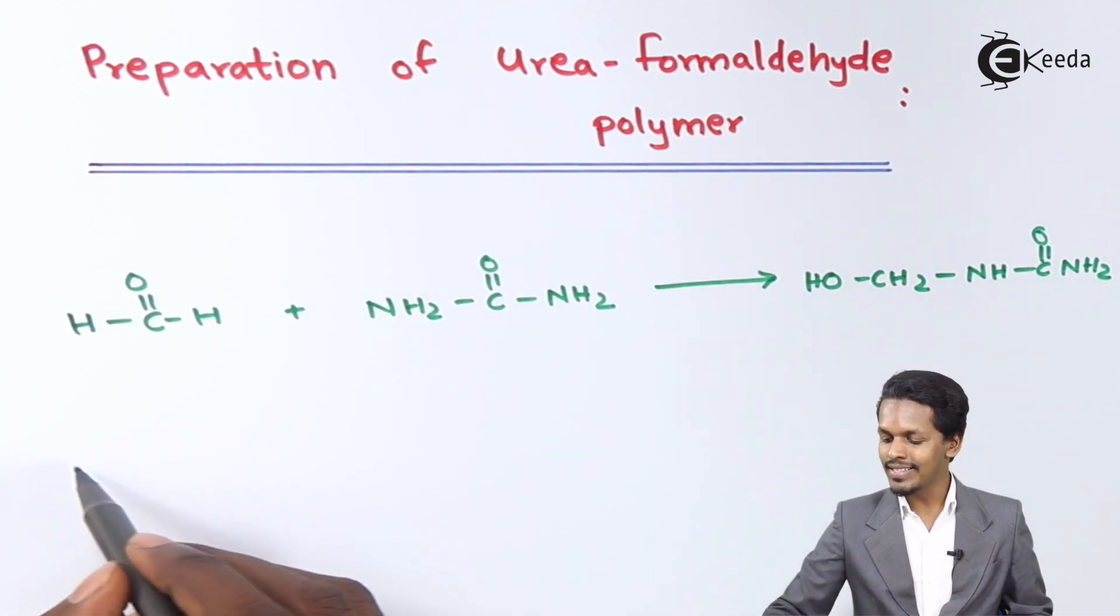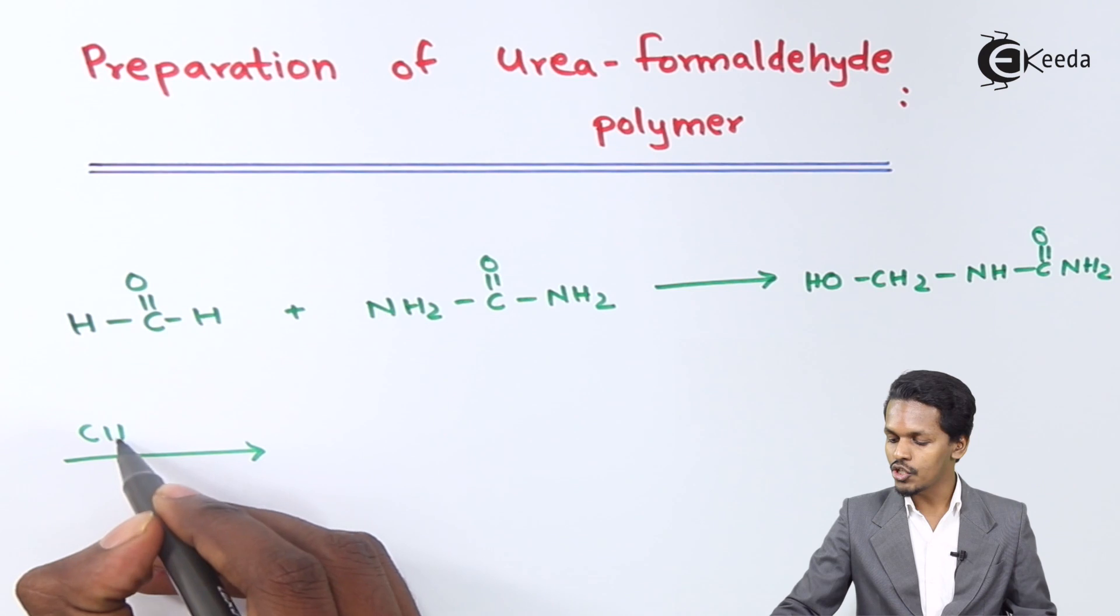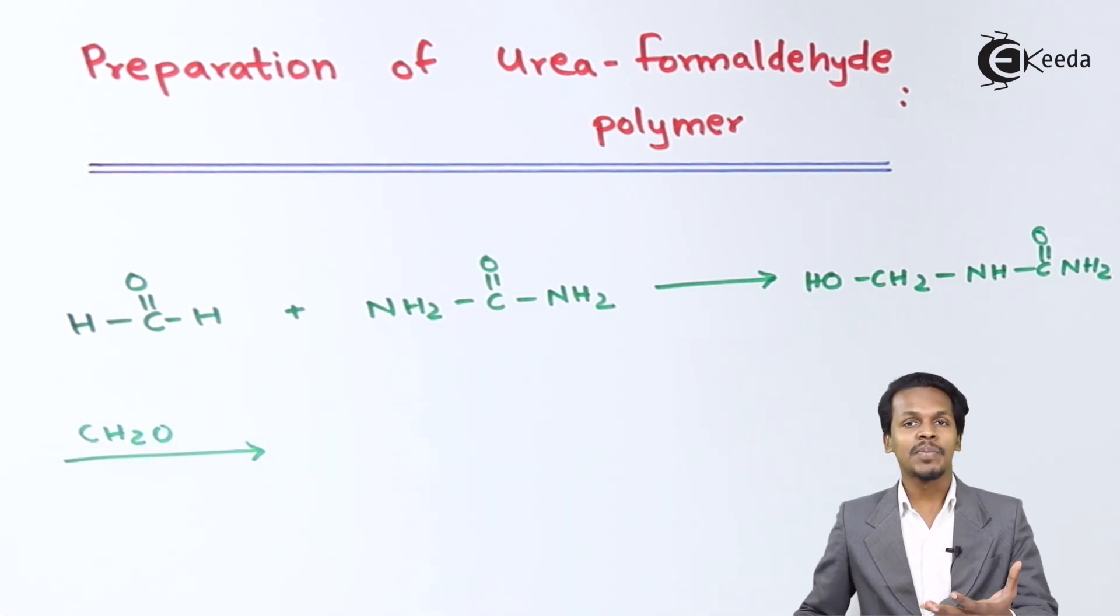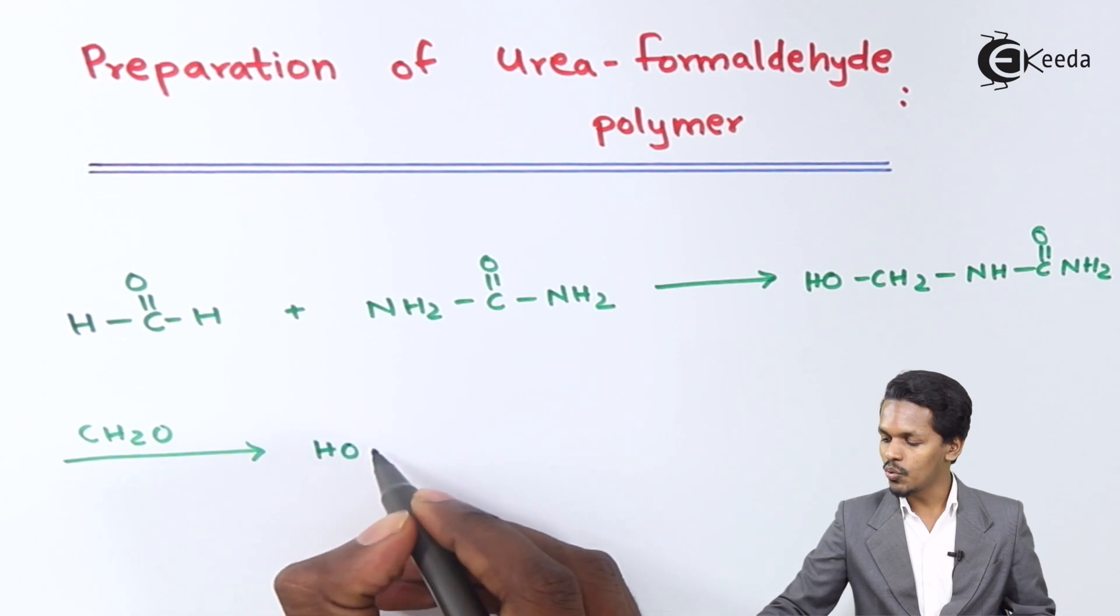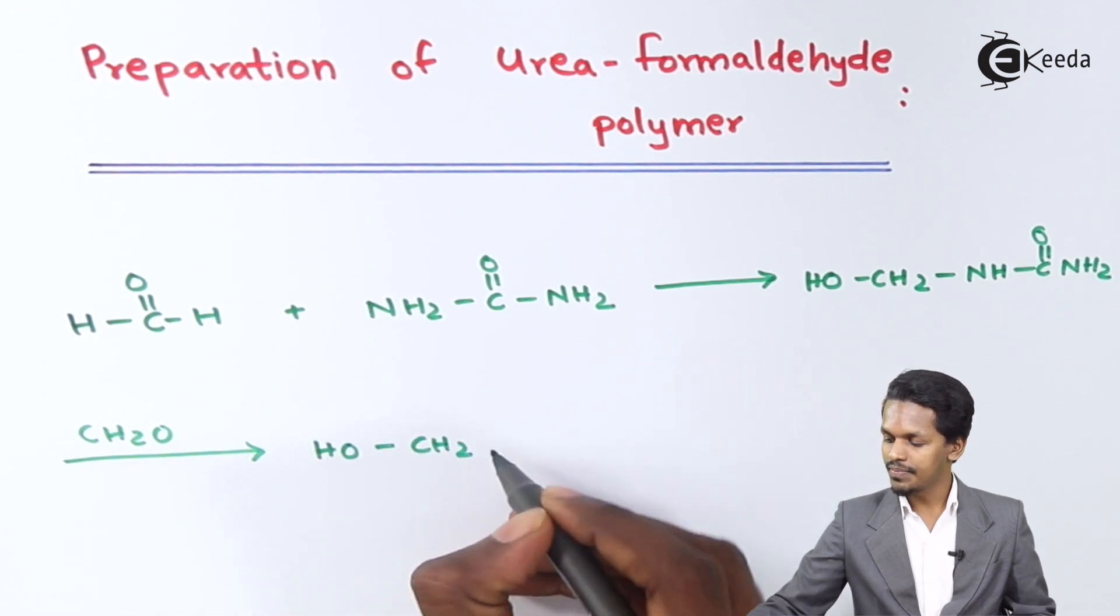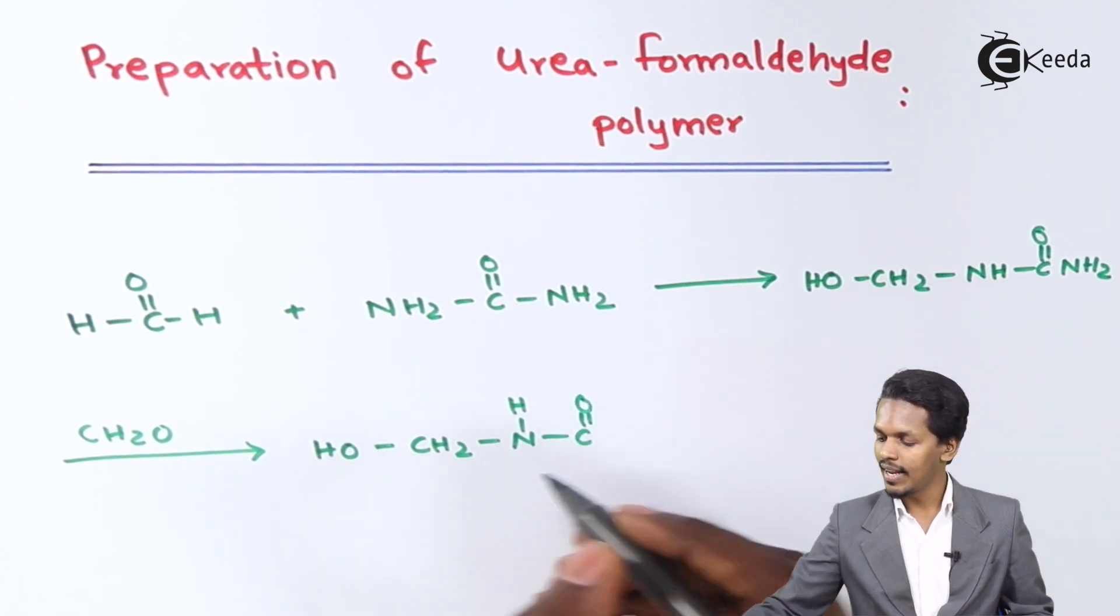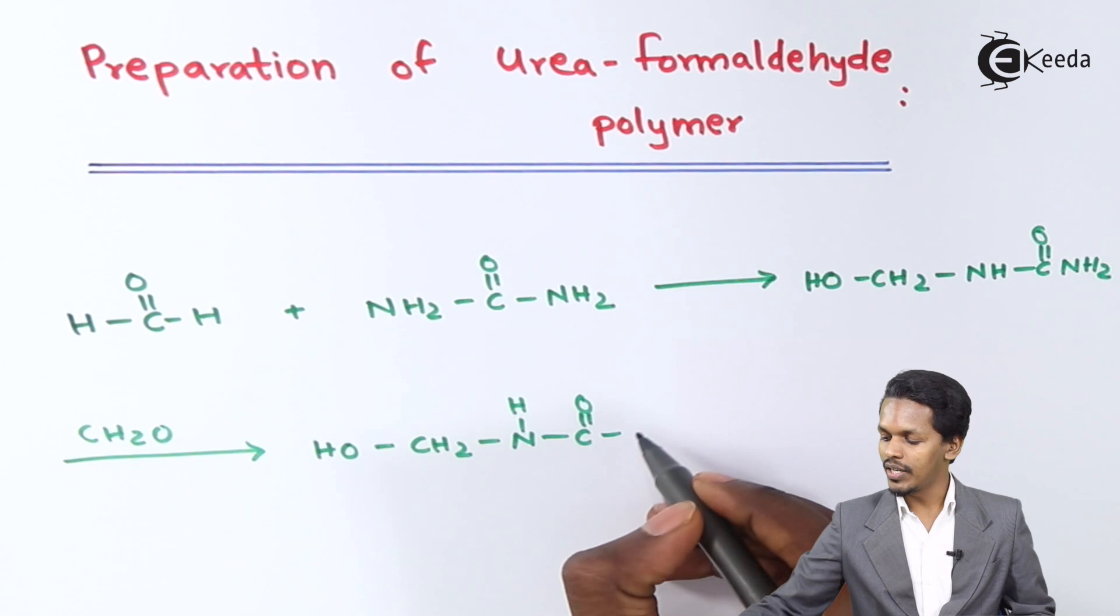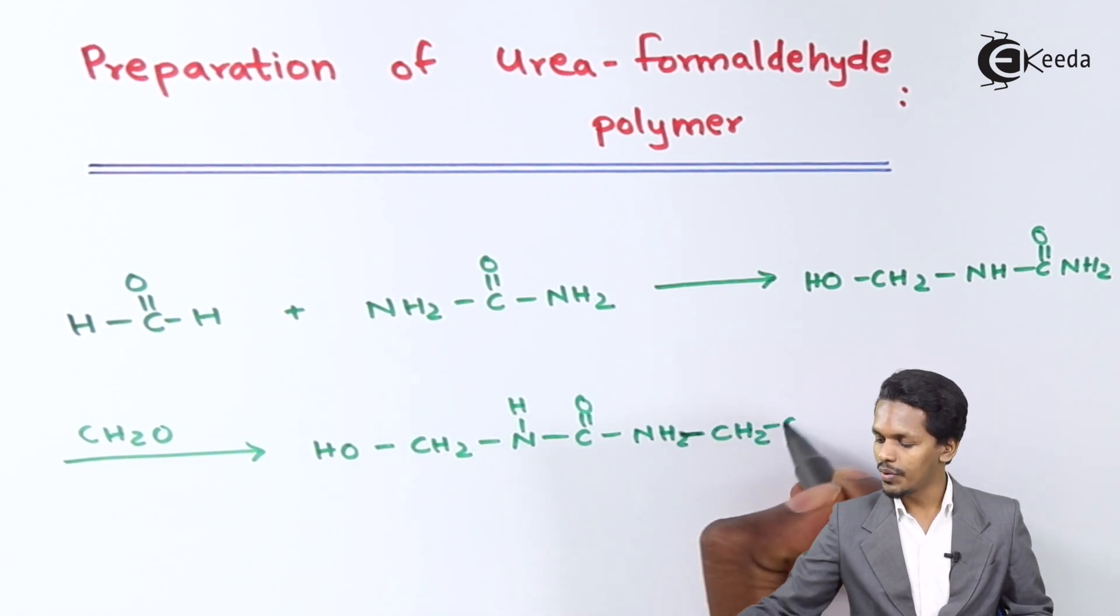And suppose if this molecule is further treated with formaldehyde, that is CH2O, in this case the product that we could get would be HO-CH2. This one will be NH-C double bond O, and this NH2 will turn into NH-CH2-OH.